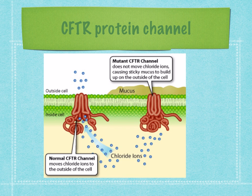Here you can see the normal CFTR protein and the mutant CFTR protein. The normal protein moves chloride ions outside of the cell so water can follow. The mutant CFTR protein has not been folded into the correct structure, so it isn't properly inserted into the membrane. The chloride ions will not be able to flow through the protein, so water does not follow — resulting in thicker mucus and very salty sweat.